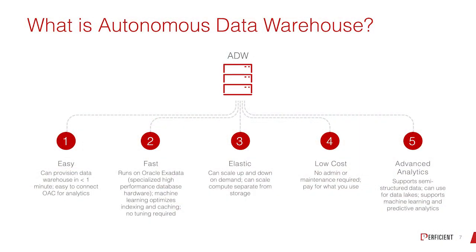What is Autonomous Data Warehouse? Five things — so we're up to eight things total. Number one: easy. In less than a minute you can have a data warehouse in the cloud, ready to go. Autonomous Data Warehouse on the cloud runs on Oracle Exadata, a specialized machine for database engineering.